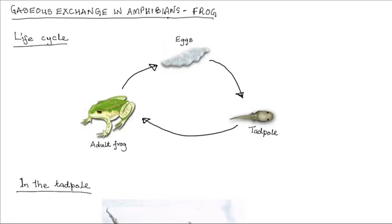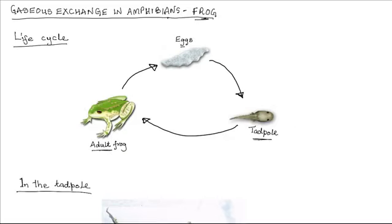Gases exchange in amphibians. We look at one member of the class Amphibia as a representative of how gas exchange occurs among the amphibians. Amphibians will be represented by the frog. The frog, just like the rest of the amphibians, lives on both land and in water. The early stages of growth and development is represented by the tadpole that hatches from the eggs. The adult frog lives partly in water and on land, and because of its varied habitats, the frog has structures for breathing in water and on land.